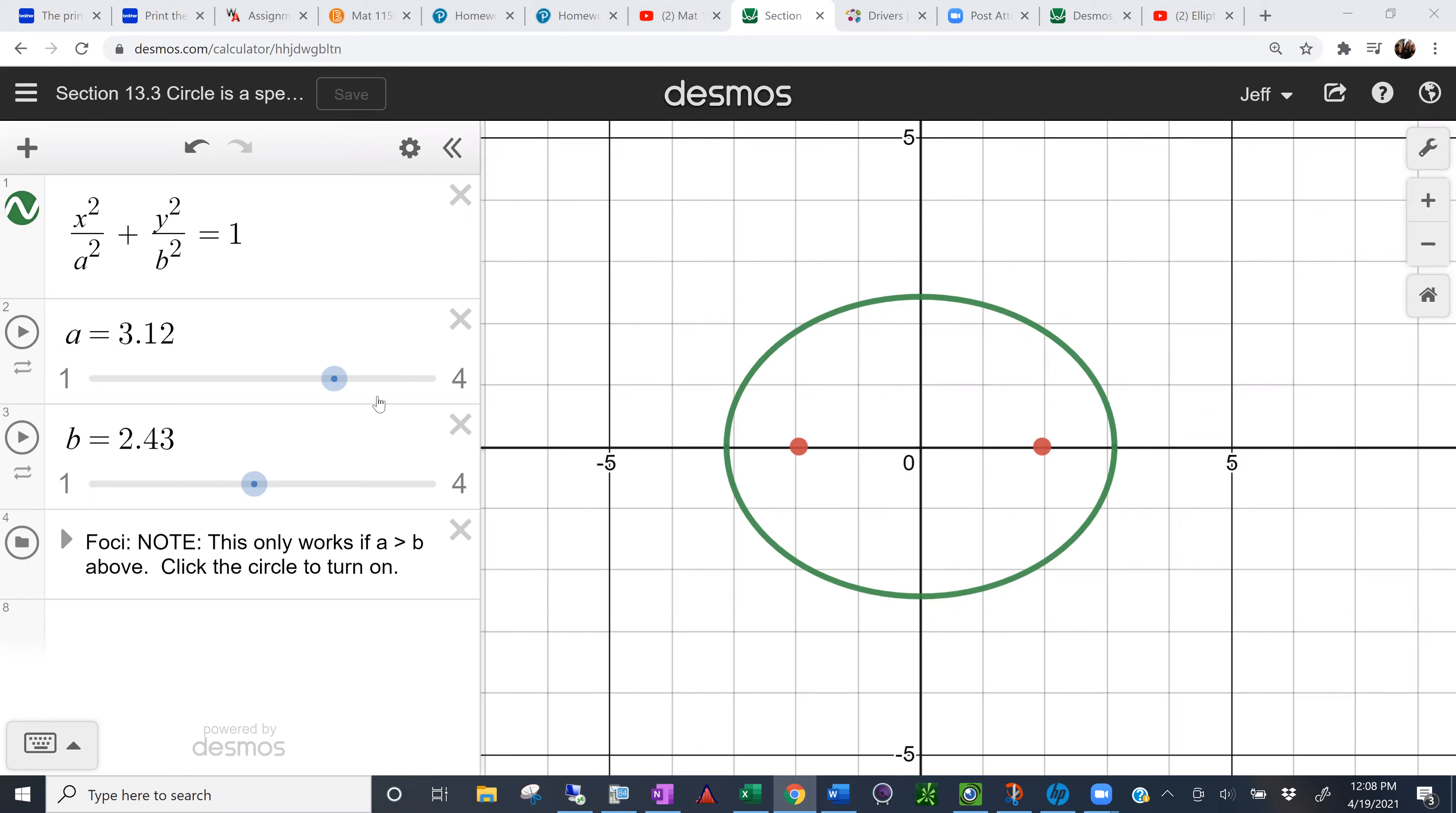And you can play around with the shape of an ellipse like this. So you can move this out, stretch it. This is a more eccentric ellipse. That is, it's narrower and you can make b smaller.